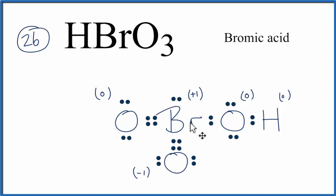And by doing that, the formal charges on the oxygen and the bromine are now both 0. So that makes this the most favorable or likely Lewis structure for HBrO3, bromic acid.